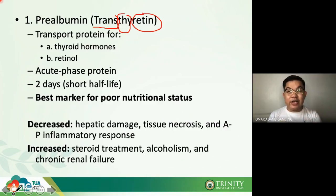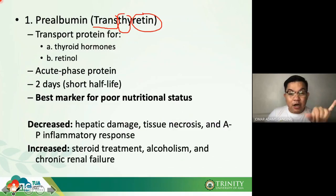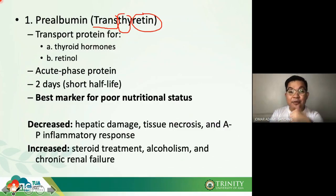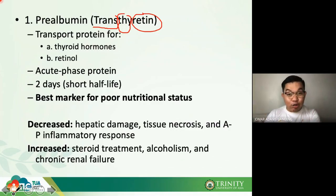Acute phase reactants are proteins that respond when there is inflammation in the body. There are two types: positive acute phase reactants, which increase with inflammation, and negative acute phase reactants, which decrease with inflammation. Prealbumin is a negative acute phase reactant.